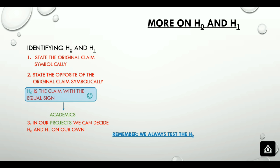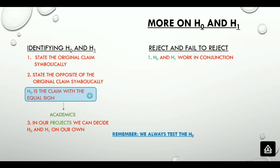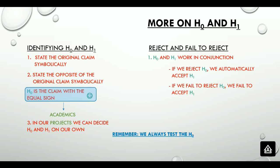Let's look at the reject and fail to reject a null hypothesis concept. H sub 0 and H sub 1 actually work in conjunction. If we reject H0, we automatically accept H1. And if we fail to reject H0, we fail to accept H1. Super important to know here is that if we want to prove a statement true, we must state it as H1, the alternative hypothesis.